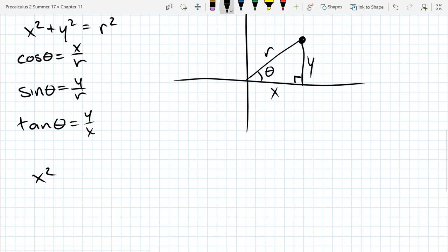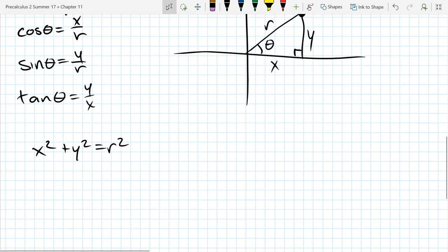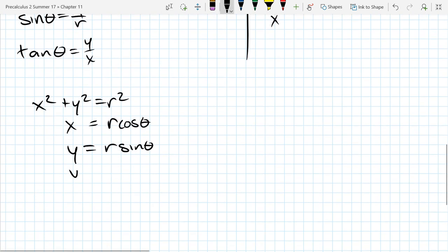The first equation is already in a nice form, so I'm just going to copy that one down. Now all the trig—let's put the rectangular on the left, so I'm going to multiply by r. So x equals r cos θ, y equals r sin θ, and y over x equals tan θ.